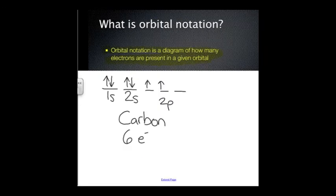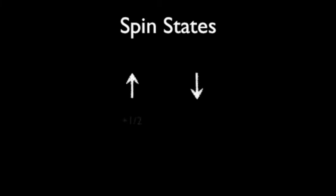The spin states of the two unpaired electrons in carbon are the same, yet in the 1s and 2s orbitals they are opposite because they are paired electrons. Spin states are necessary to make sure that no electrons in the same atom have the same four quantum numbers. The spin state of an electron determines the spin quantum number, which is either plus 1/2 or negative 1/2. The up arrow is plus 1/2 while the down arrow is negative 1/2.